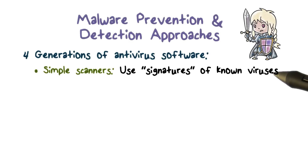A signature of a virus is typically the unique sequence of instructions of the virus code, or the unique infection marker that the virus would use. However, these simple scanners are not effective against polymorphic viruses.